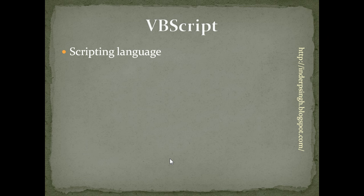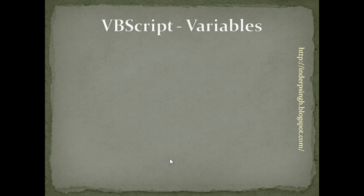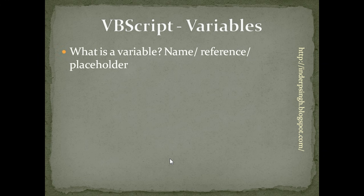The good thing about VBScript is that it runs on all Windows machines because it is built into the Windows operating system. VBScript is similar to Visual Basic but it is simpler, very easy to learn, and a lot of fun to write your own scripts in. The complete name of VBScript is Microsoft Visual Basic Scripting Edition. Now let us get started with VBScript. In VBScript, there is a concept of variables. A variable is a name, a reference, or a placeholder within the script. You can think of a variable as a scorecard — it is a reserved place and you can place any kind of data within that reserved space.